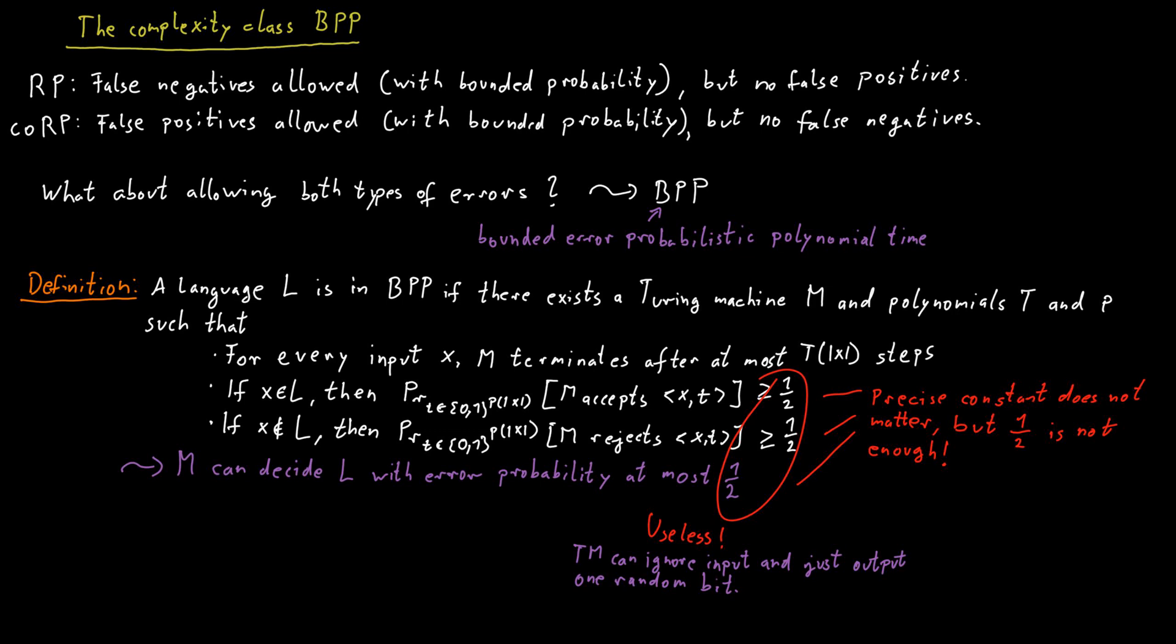But this is really the only problem. Other than that, we can replace the two-thirds with any other constant that is strictly bigger than one-half and smaller than one. And we would get exactly the same complexity class, BPP. To see this, we need a probability amplification technique again.